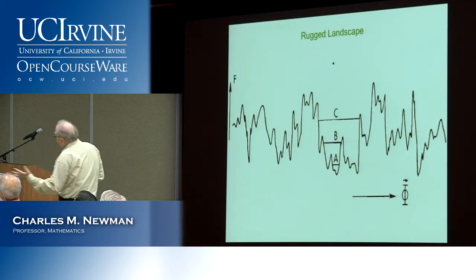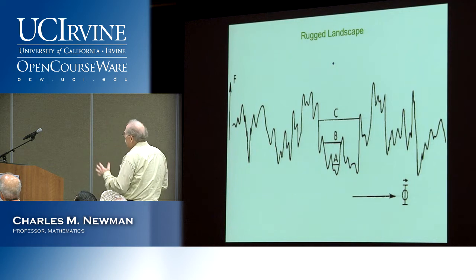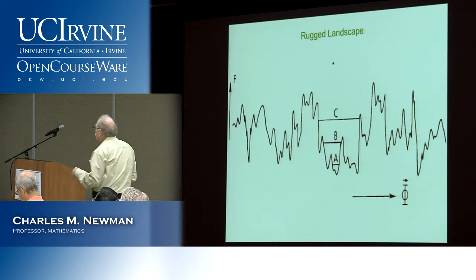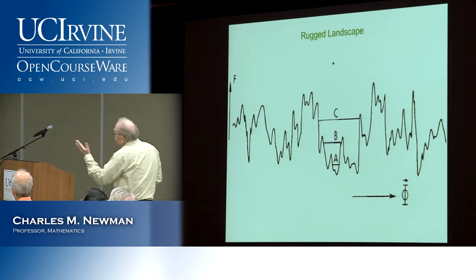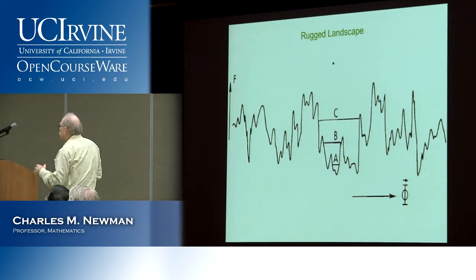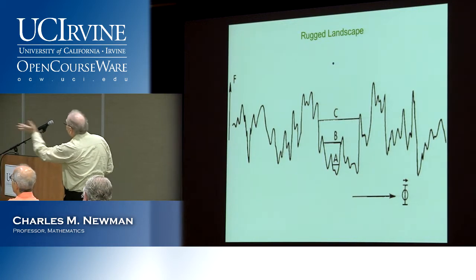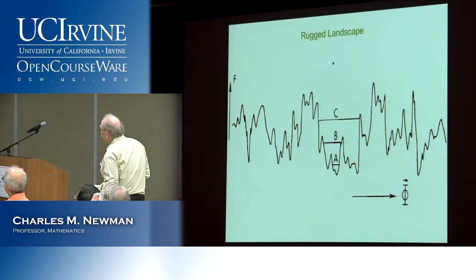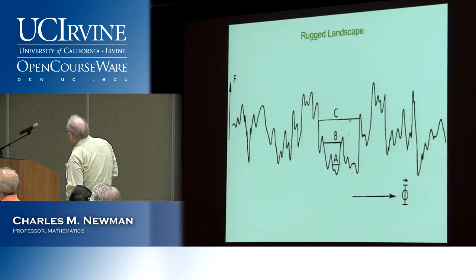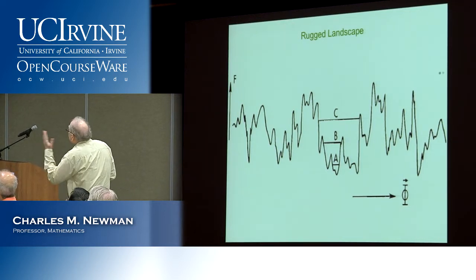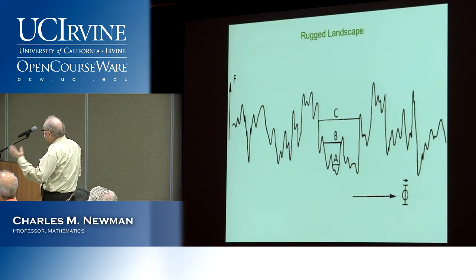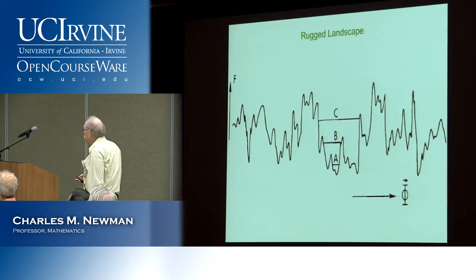The combination of disorder and frustration leads to energy landscapes — or free energy landscapes — which are very rugged with many peaks and valleys. The system tries to find its way to as low an energy configuration as possible. In biological contexts you might look at fitness landscapes and evolution. The dynamics gets rather complicated as the system tries to find its way towards low-lying valleys, which represent low energy or high fitness in the biological context.